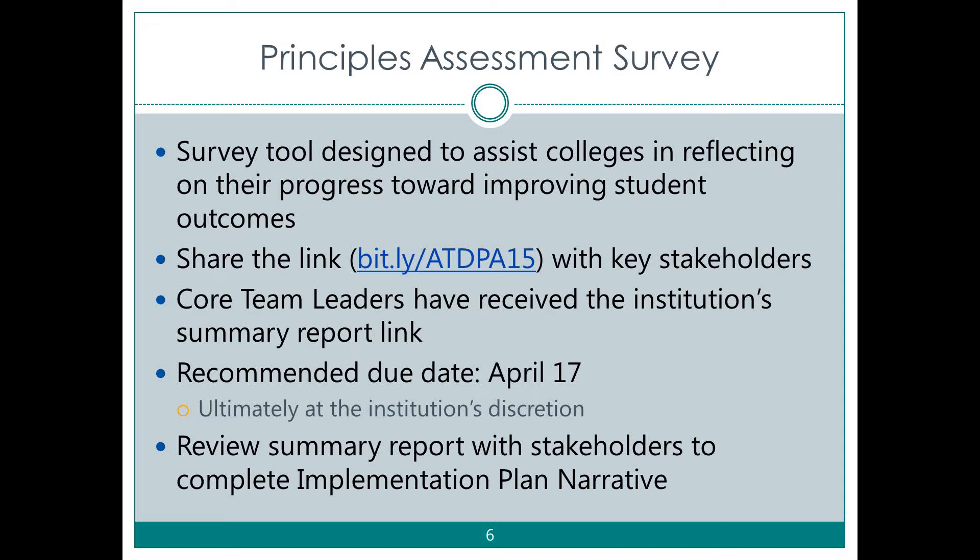The bulk of the implementation plan is around the priority work plan. This is where you as the college team identify those two or three student success priorities, flesh them out in terms of the interventions you want to put in place, think about how you're going to measure progress, and think through the steps needed for success. That includes the people who need to be overseeing this work, the financial and human resources needed, and the kinds of programmatic support required to carry out the priorities.